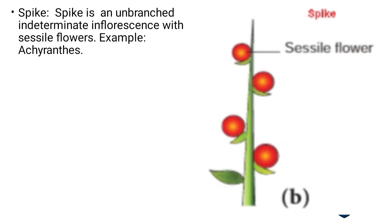The next type is spike. In spike, the main axis does not possess any florets at the tip, and the florets are sessile, arranged in acropetal succession — older flower below and younger flower above. Example: Achyranthes.